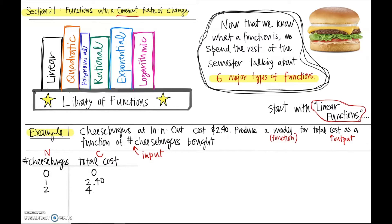Two cheeseburgers will be $4.80. Three cheeseburgers — $4.80 plus $2.40 — that'll be $7.20. Four cheeseburgers, it's $9.60. I could keep going, but I definitely see the pattern. So cost as a function of number of cheeseburgers is just however many cheeseburgers you have times $2.40.